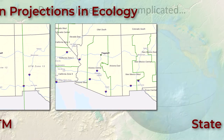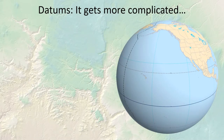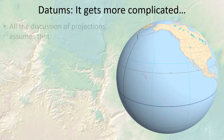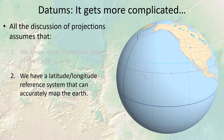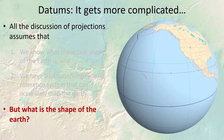If your analysis area is larger than a few hundred miles wide, you're going to need to use a different projection and accept greater distortion. All our discussion about projections makes the assumption that we actually know the true shape of the earth, and that we have a latitude-longitude coordinate system that can accurately map it.